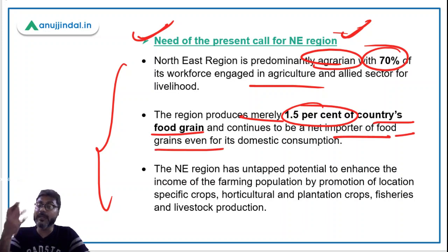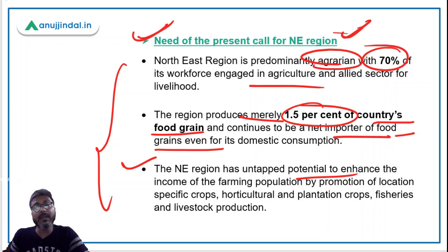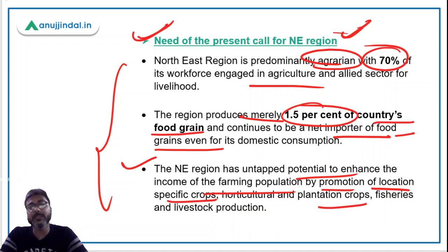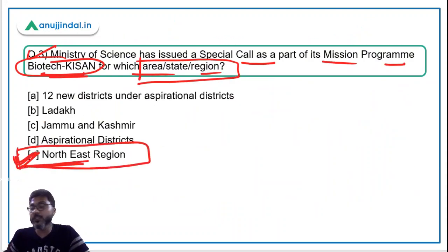The need for a special call for the northeastern region is because it is predominantly agrarian — 70 percent of its workforce is engaged in agriculture and allied activities. Yet the region produces merely 1.5 percent of the country's food grains and is a net importer of food grains for domestic consumption. The northeastern region has untapped potential to enhance farming income through promotion of local-specific crops, horticulture, and plantation crops. The correct answer is Option E — Northeast Region.